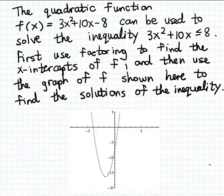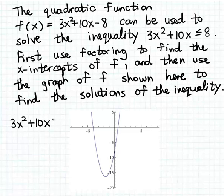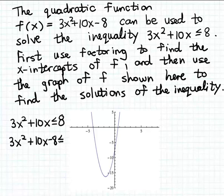In this example we want to use the graph of a function to solve the quadratic inequality 3x squared plus 10x is less than or equal to 8. By setting one side of this inequality to zero, we can see the formula for the function we're going to use. I'm going to subtract 8 from both sides, which gives the equivalent inequality 3x squared plus 10x minus 8 less than or equal to zero.